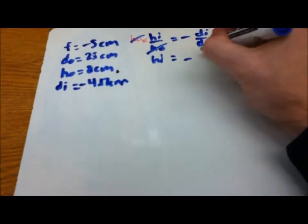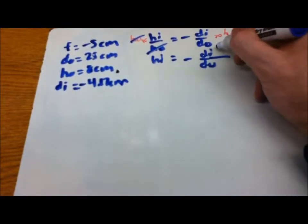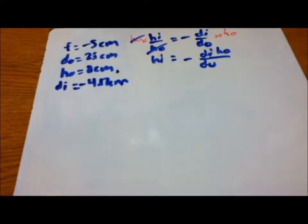Hi then becomes minus di over do times ho, so that's di, and of course ho would be up there with the di. Now just substitute our values in.